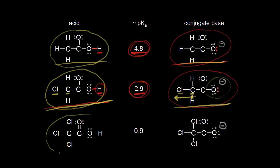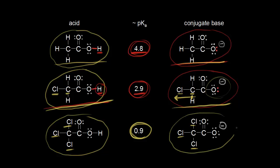We can see what happens as we increase the number of chlorines. Trichloroacetic acid has three chlorines, and the pKa has lowered even more, because all of these chlorines are withdrawing electron density. All of these electron-withdrawing groups spread out the negative charge, stabilizing the conjugate base. This is the most stable conjugate base of the three, so trichloroacetic acid is the most acidic compound of the three.